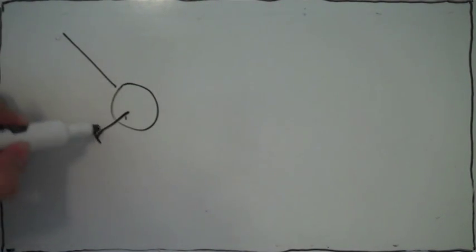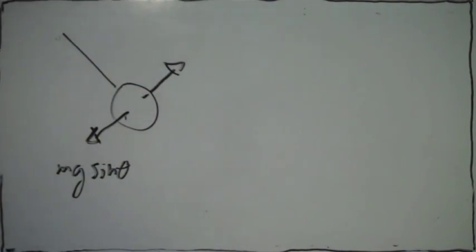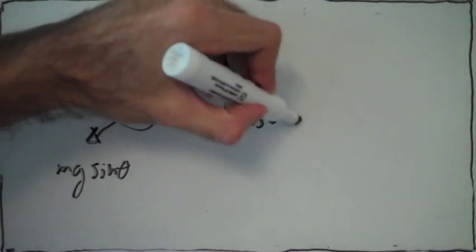So let's draw this again. Here we have the component of gravity, which is mg sine theta, and the component of the electric force, which is f cosine theta. So we just say that these two things are equal to each other.